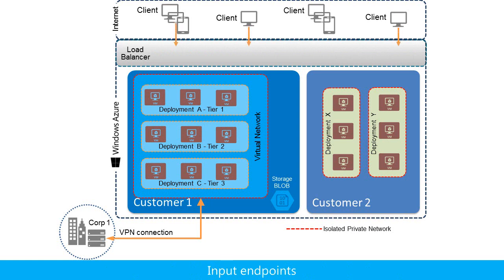Incoming traffic from Internet clients to virtual machines must be specifically allowed by the load balancer through the configuration of input endpoints. An input endpoint allows a specific type of traffic — essentially an open port to the Internet — and maps a public port number to an internal port number for traffic to a specific virtual machine.